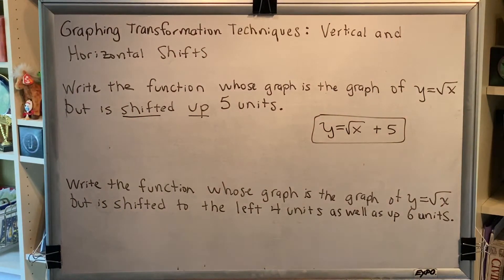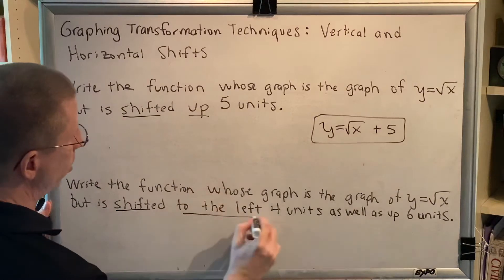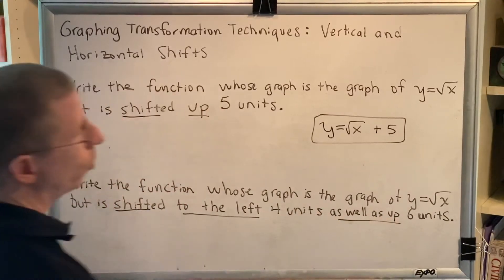Okay, so this is an example where we have both a vertical and a horizontal shift in the same problem. The reason why I know that is because it says shift, and it says to the left, which is horizontal, as well as up, which is vertical.